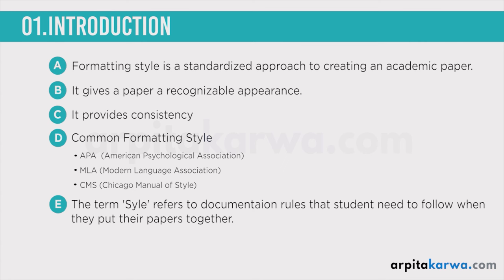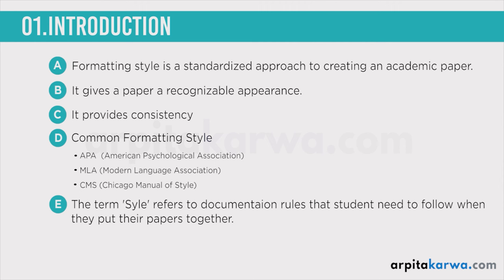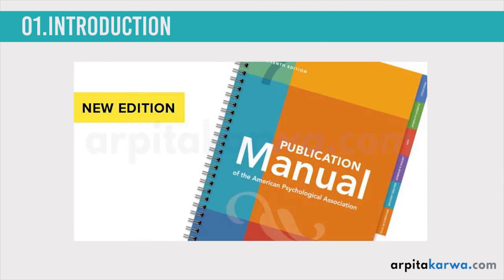The term 'style' in research refers to the documentation rules that students need to follow when they put their paper together. When they write their dissertation, they have to follow certain documentation rules, which we know as styles. A paper in APA style looks different than one in MLA or CMS style. Note that the terms 'format' and 'style' are used interchangeably — both mean the same thing. Formatting style will include things like where the paper's title goes, how the author's name is displayed, the line spacing, and how sources are cited in the text.